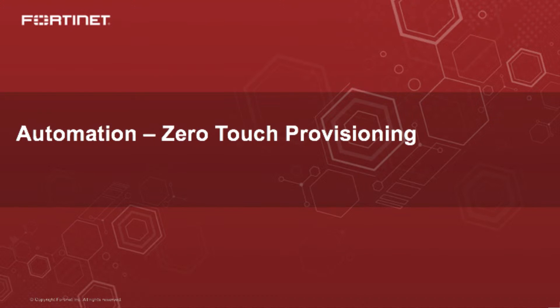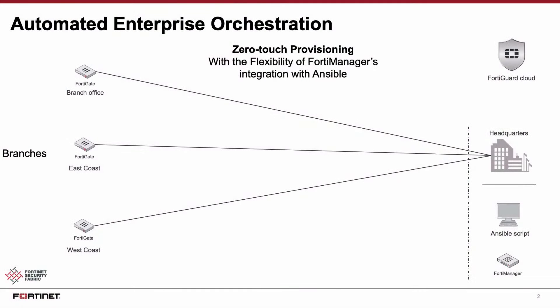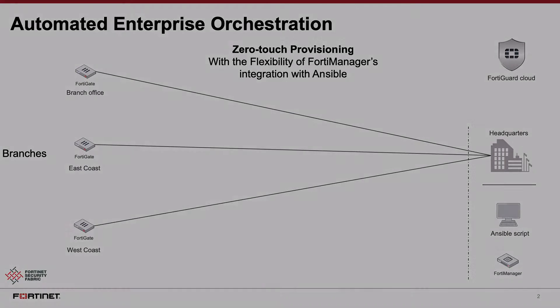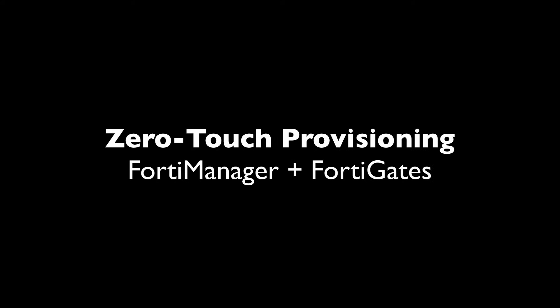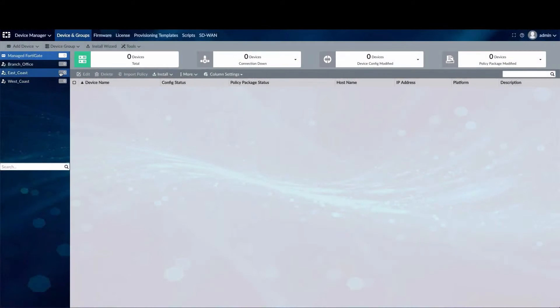In this video we will take a quick look at Fortinet's comprehensive solution to automate enterprise orchestration leveraging zero-touch provisioning. The basic topology we are looking at is multiple remote offices that have FortiGates which are managed by FortiManager at HQ. We will look at how the deployment of these branches is achieved in a manner that is automated, quick, and simple within the FortiManager.